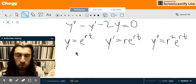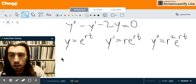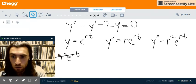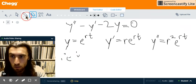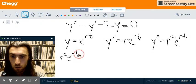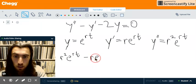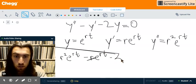So, we have y and its derivatives, so let's plug that back into the equation. We got r squared e to the rt minus y prime, which is r e to the rt, minus 2y. And y is just e to the rt. And we set that equal to 0.